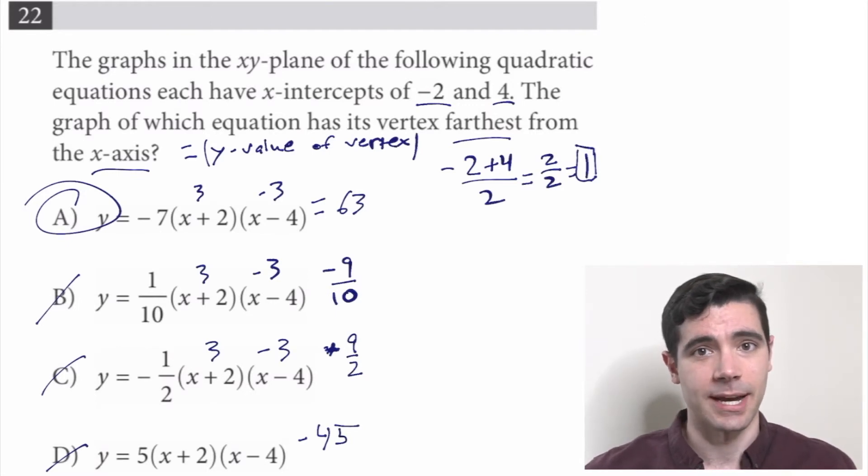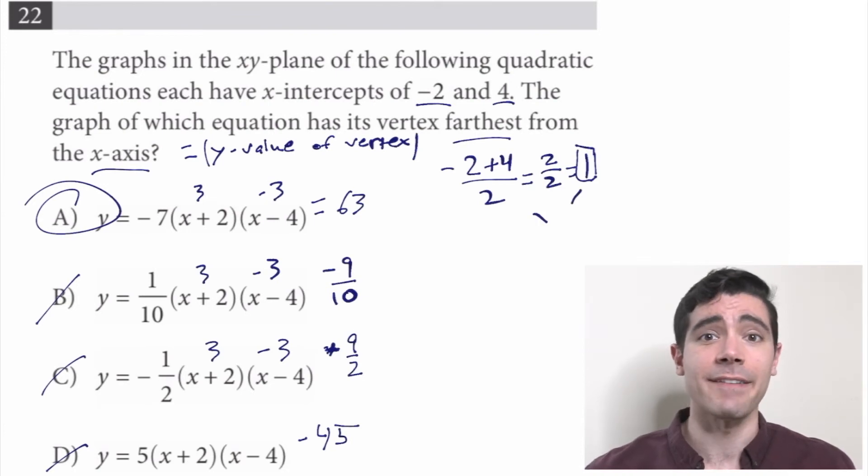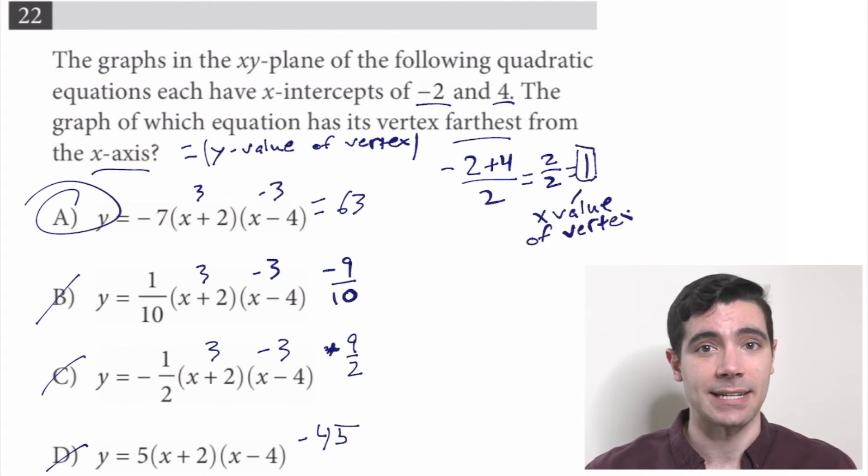There are a bunch of different ways that you can approach a question like that. I find it simplest to take those x-intercept values and average them, thus giving me the x-value of the vertex, and then plugging that value into the equation to shoot out the y-value of the vertex. In this case, we wanted to know which vertex would be farthest from the x-axis, which was a weird way of asking about the absolute value of the y-value of the vertex. A y-value of 63 would be 63 units away from the x-axis, and all the other ones were smaller than that. So the answer was A.